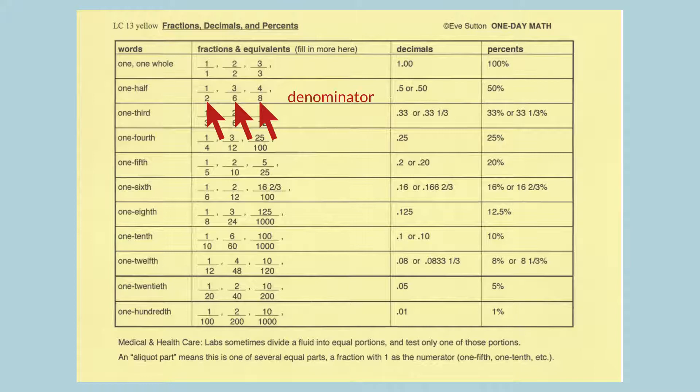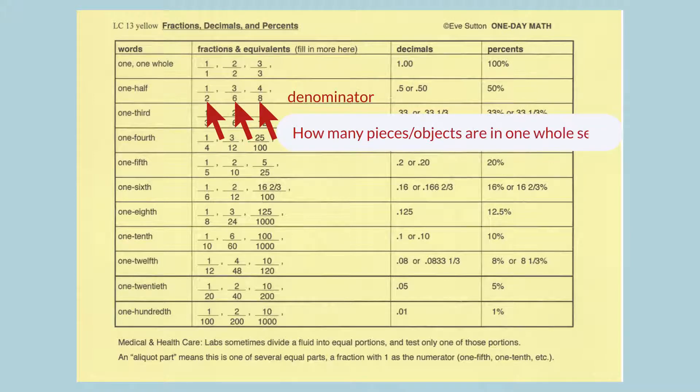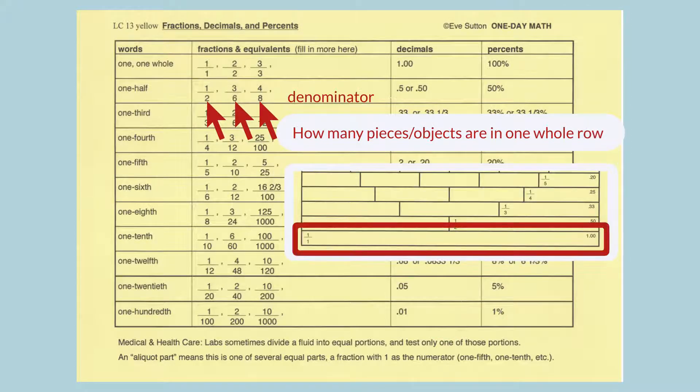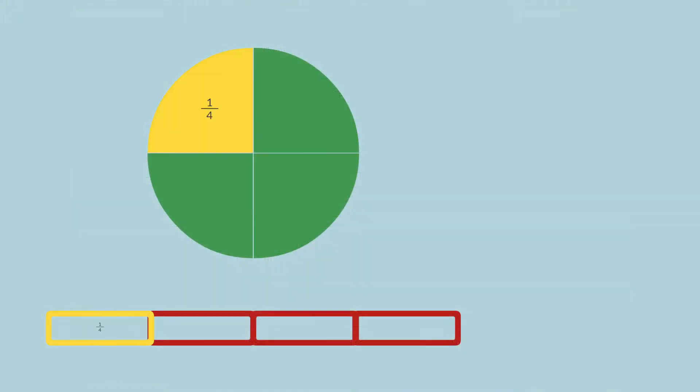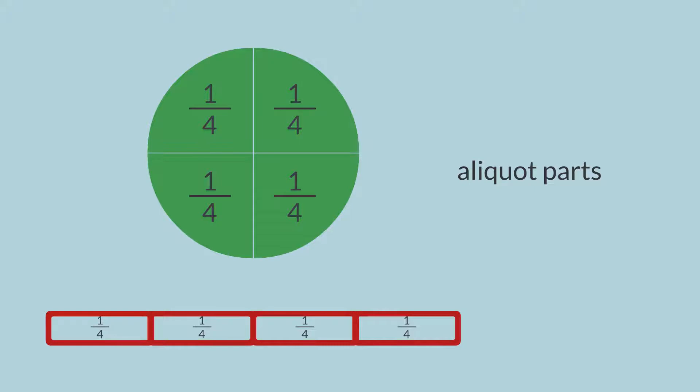The denominator shows how many pieces or objects are in one whole, meaning one whole set or one whole circle or one whole row of the brick wall. The pieces are always equal in size, known as aliquot parts.